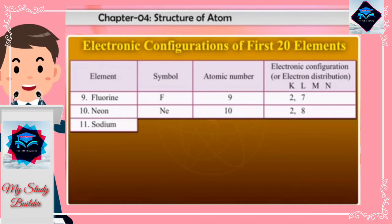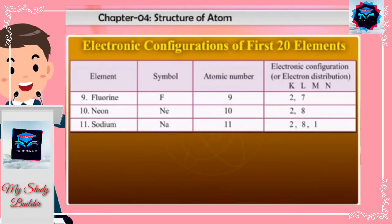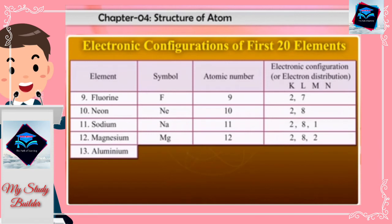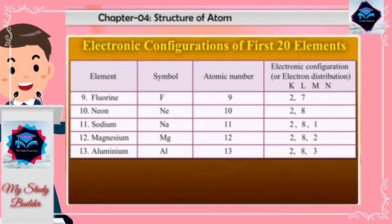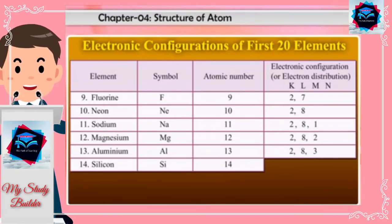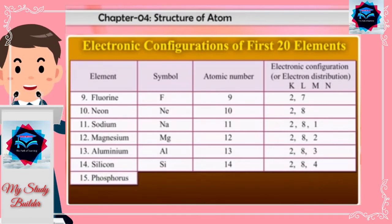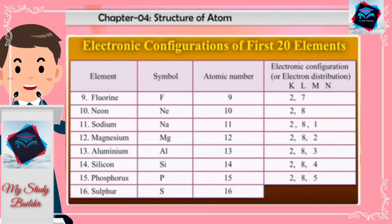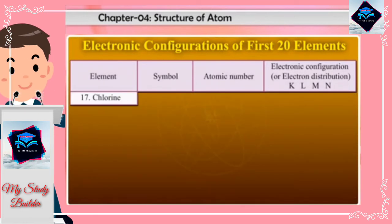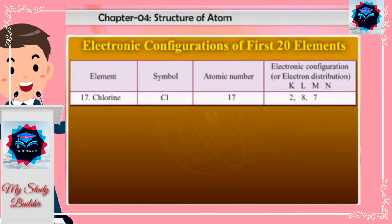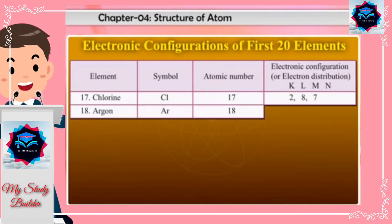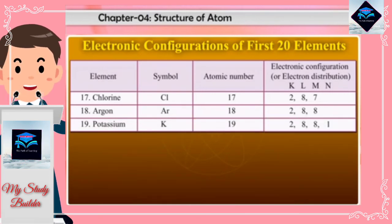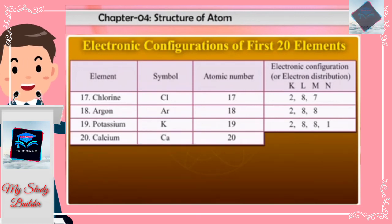Sodium Na 11: 2 8 1. Magnesium Mg 12: 2 8 2. Aluminium Al 13: 2 8 3. Silicon Si 14: 2 8 4. Phosphorus P 15: 2 8 5. Sulfur S 16: 2 8 6. Chlorine Cl 17: 2 8 7. Argon Ar 18: 2 8 8.